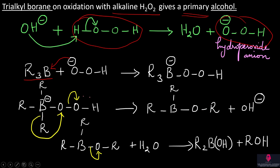After the migration, we get B–OR. Then OR plus OH– reacts with H+ (from water), giving ROH — that is, CH3CH2CH2OH — 1-propanol. This is the primary alcohol product.